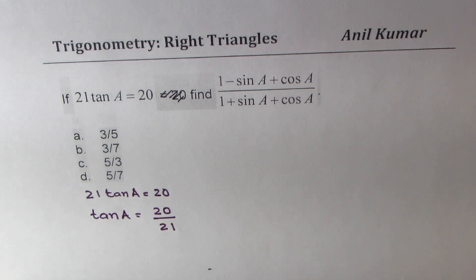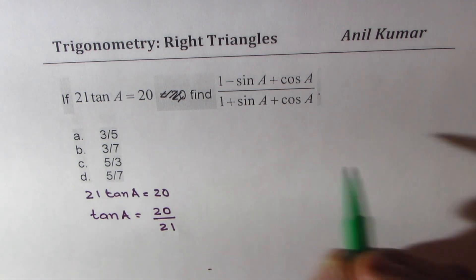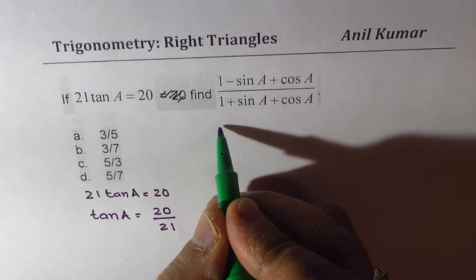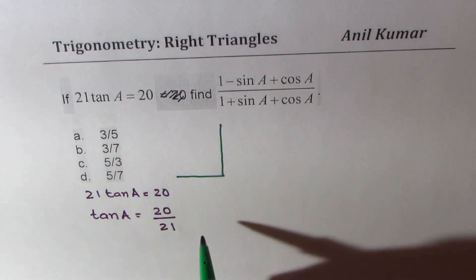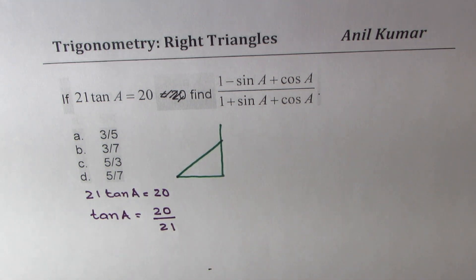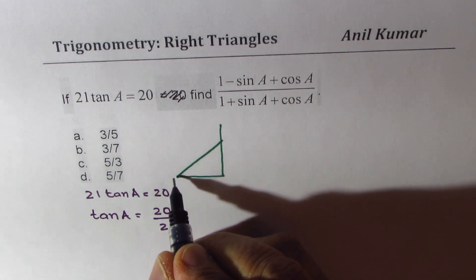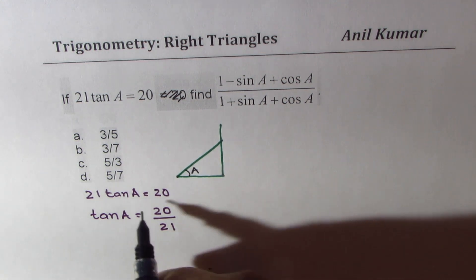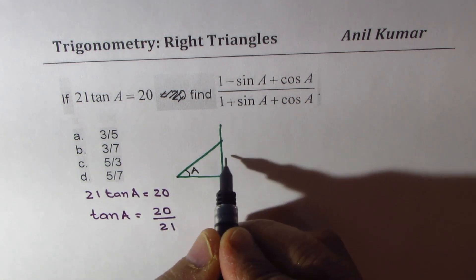So what we can do is make a right triangle. Let me make a right triangle here. And in this right triangle, we have the sides which are for the angle A with ratio 20 over 21.